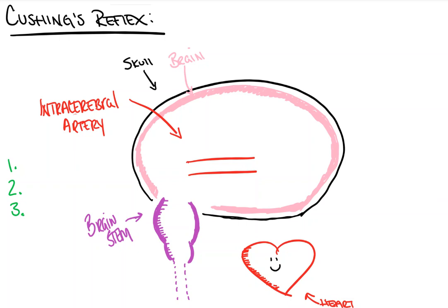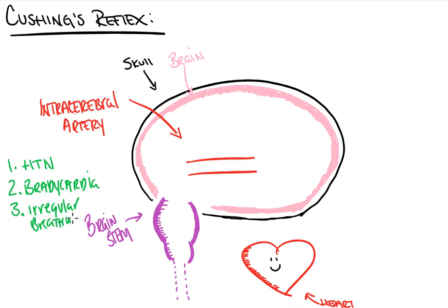The first part of Cushing's reflex is hypertension, abbreviated as HTN. Second is bradycardia, or our slow heartbeat. And third is irregular breathing, sometimes to the point of apnea. If you get nothing else from this video, you should know that these three things make up Cushing's reflex. Some people will say increased intracranial pressure is also part of the triad — that's not the case. That's the trigger for the reflex, not the triad itself.